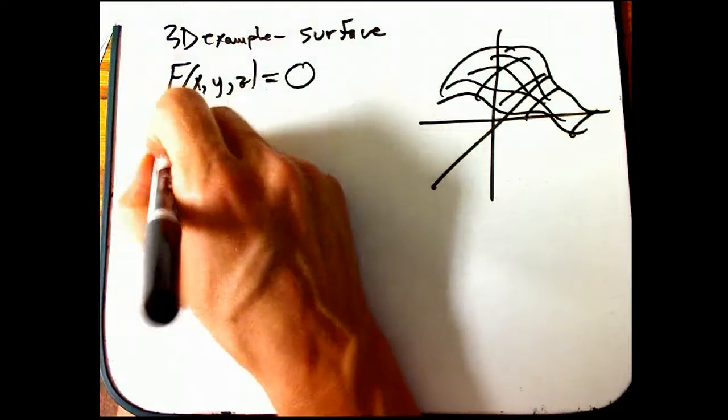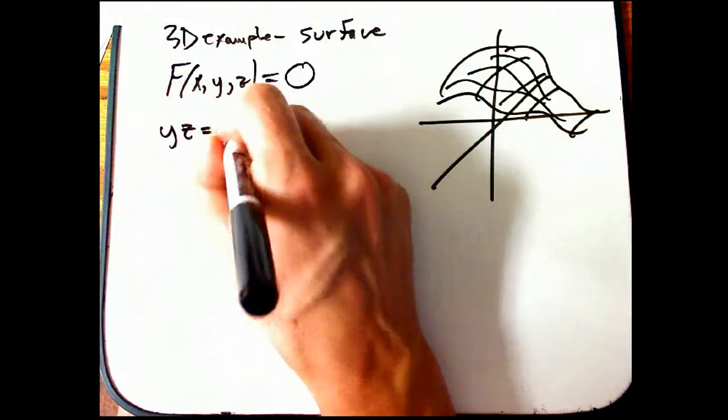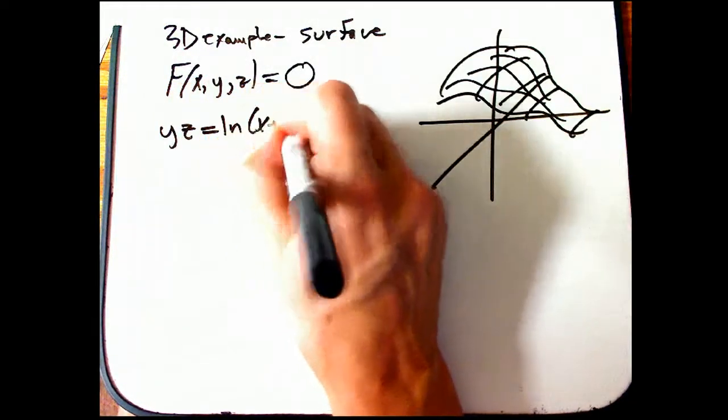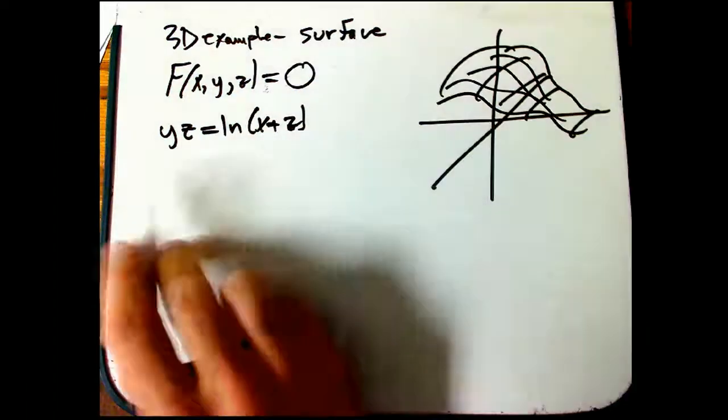So, for example, it could be, let's take this equation, yz equals ln of x plus z. That is one equation and three variables.